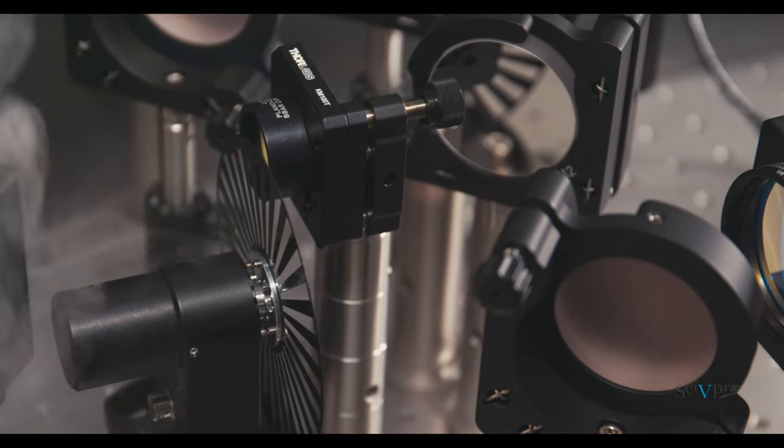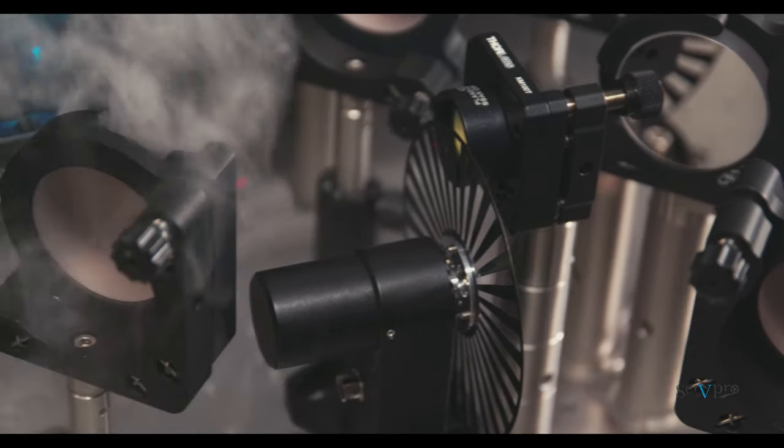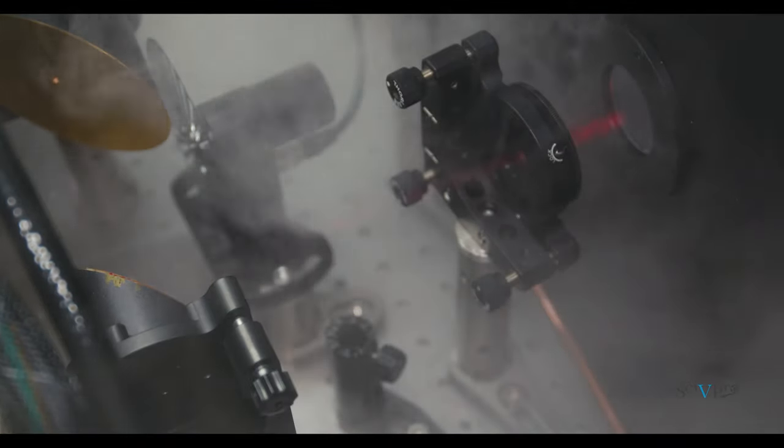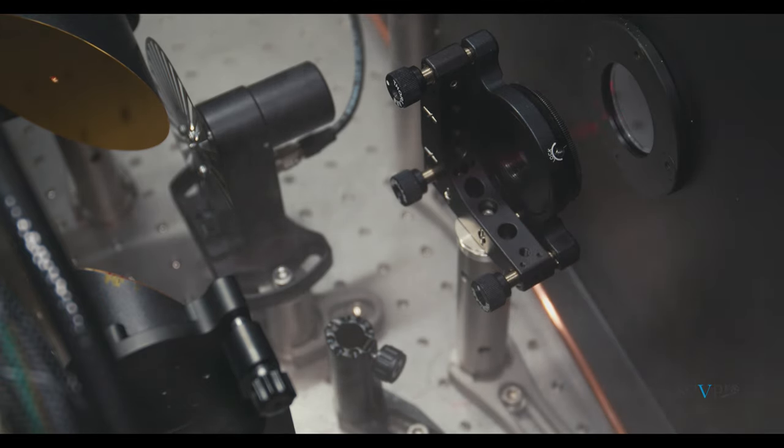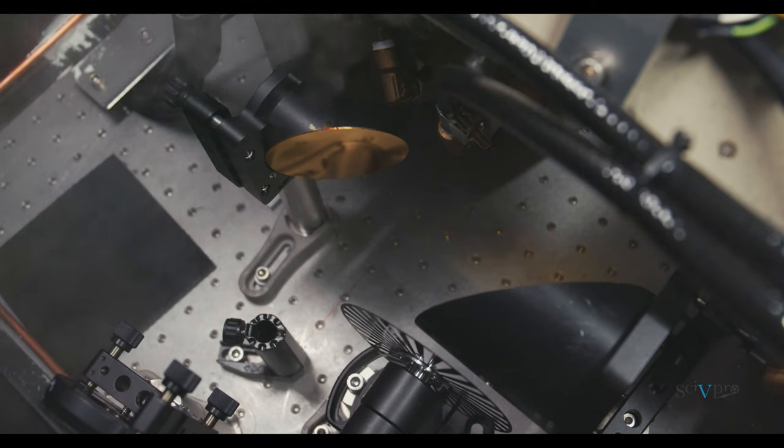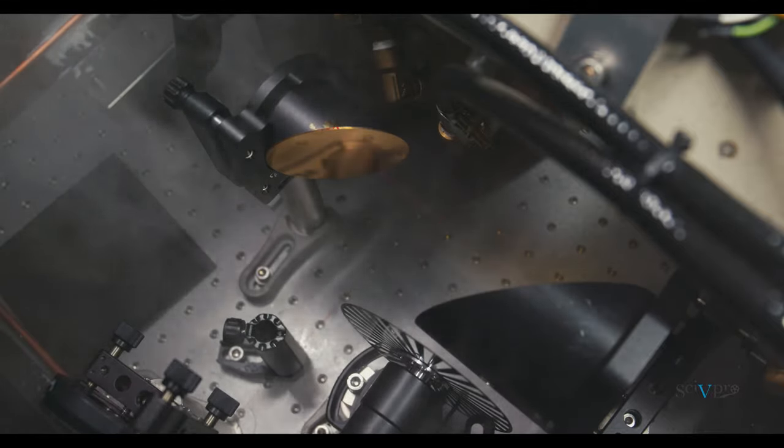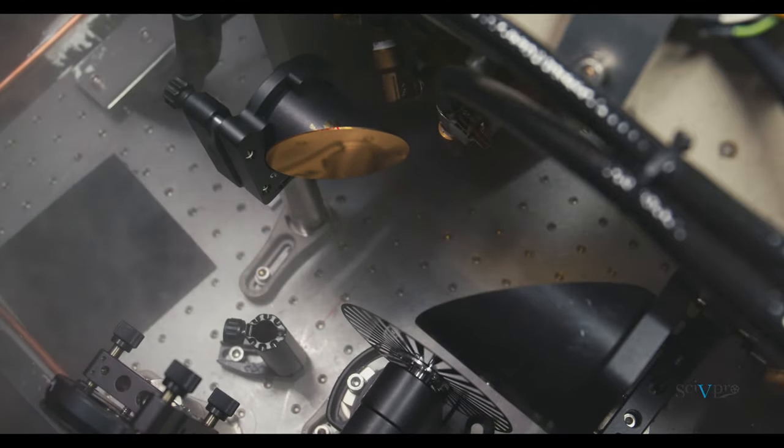Here, the beam size is adjusted to fit a chopper wheel and then focused before entering a black box. The zinc telluride crystal emits a terahertz pulse due to a second order non-linear electro-optical process called optical rectification. This terahertz pulse is then focused to the sample by two parabolic mirrors.